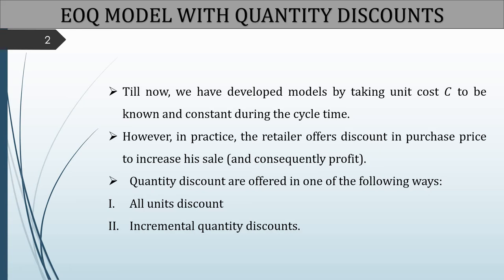There are two types of quantity discounts: all-unit discounts and incremental quantity discounts. In this video, we will talk about incremental quantity discounts. By incremental quantity discount, I mean: if I buy 10 items, they are available at Rs.100; if I buy more than 10 and less than 20, the purchase price is Rs.9; and if I buy more than 30 items, they are available at Rs.8. This is what is called incremental quantity discounts.